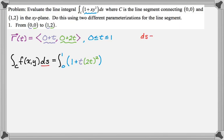ds is the magnitude of r'(t) dt. So I'm going to have to find r'(t). Since it's a linear path, r' is a little easier to find. It's going to be the derivative of t is 1, and the derivative of 2t is 2. So the magnitude of that is going to be the square root of 1 squared plus 2 squared, the square root of 5, and then dt.